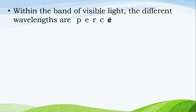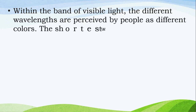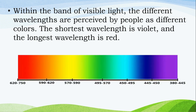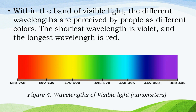Within the band of visible light, the different wavelengths are perceived by people as different colors. The shortest wavelength is violet and the longest wavelength is red. Sa loob ng banda ng nakikitang ilaw, ang iba't-ibang mga haba ng wavelength ay mapapansin ng mga tao bilang iba't-ibang kulay. Ang pinakamaikling wavelength ay lila at ang pinakamahabang wavelength ay pula.